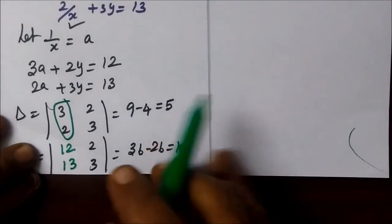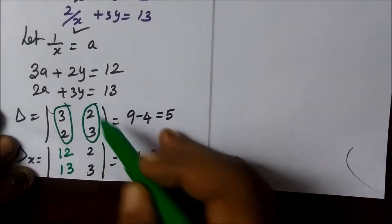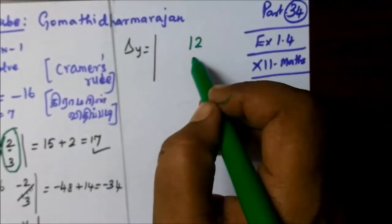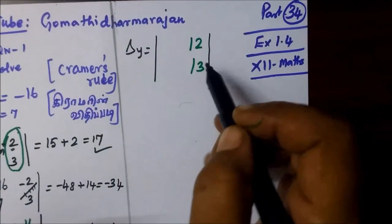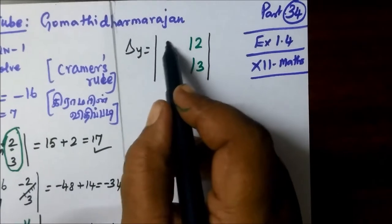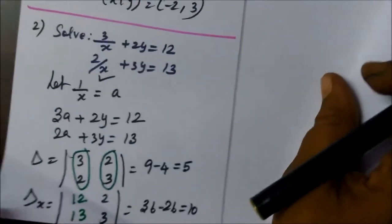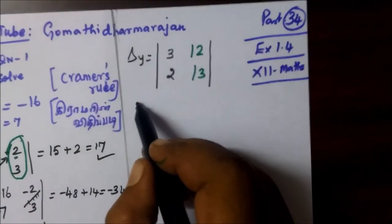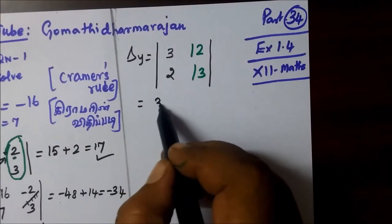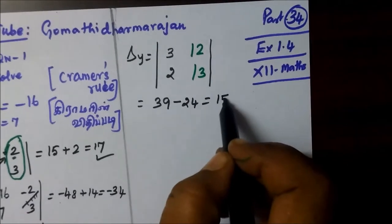We add the numbers. The second time change: 2, 3 and constants will be 12 and 13. For del x, the first time change: 3, then 2. Now cross multiply: 39 minus 24.